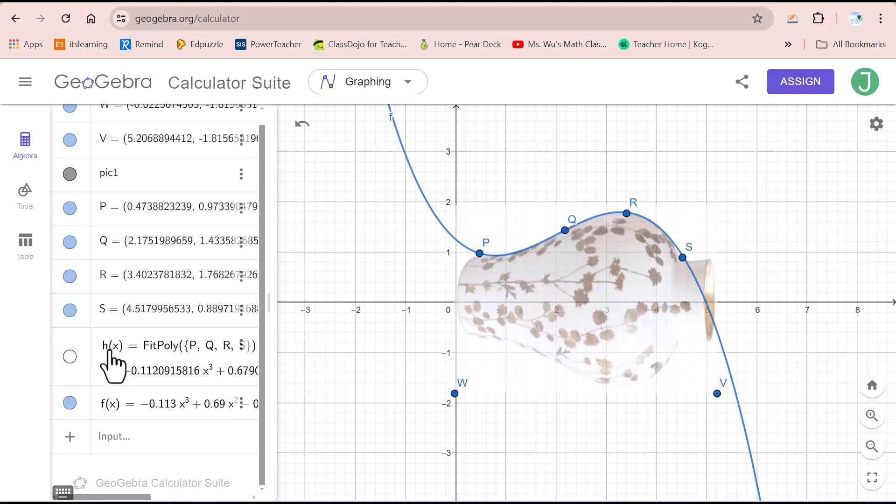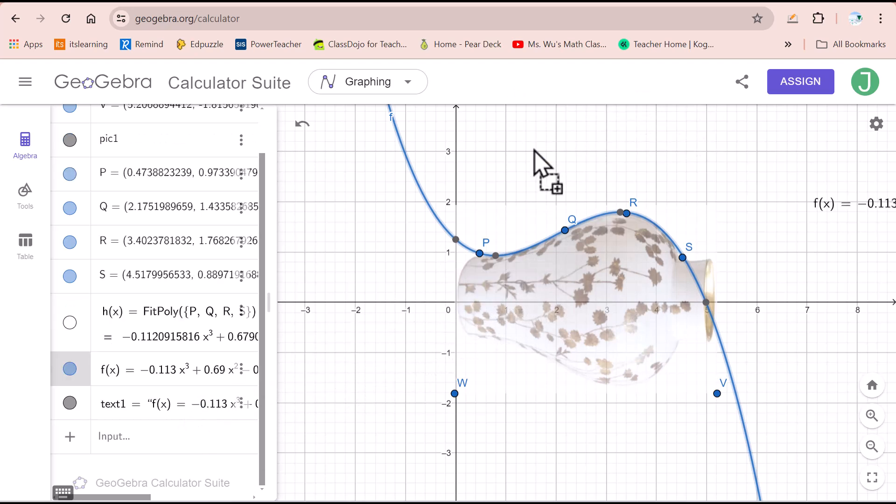I need to use the algebra to check whether this function fit the curve of the vase or not. First of all, I change this fitpoly function into H of X. Then I type in F of X into this algebra. Then click here. You could see this graph of this F of X.